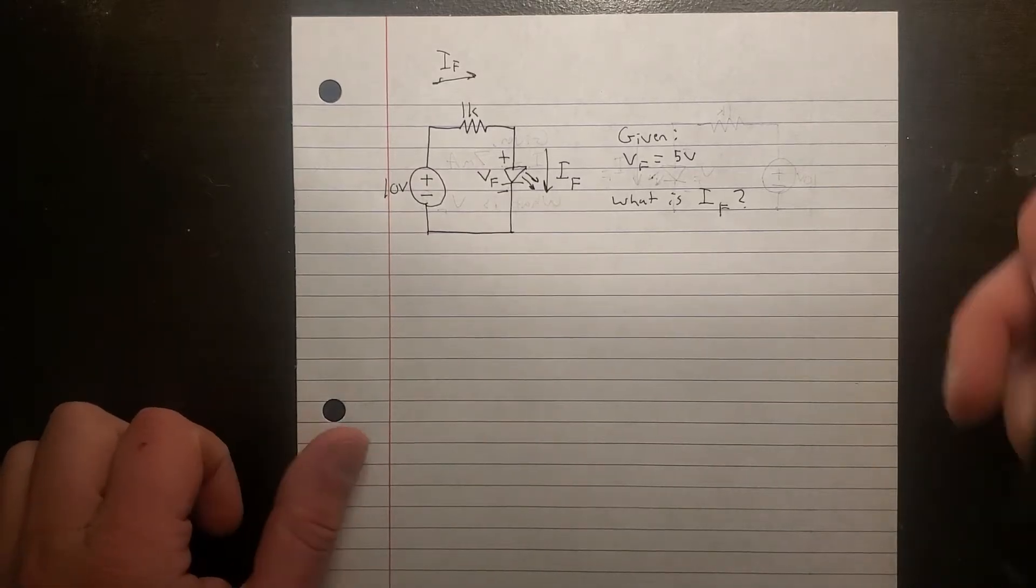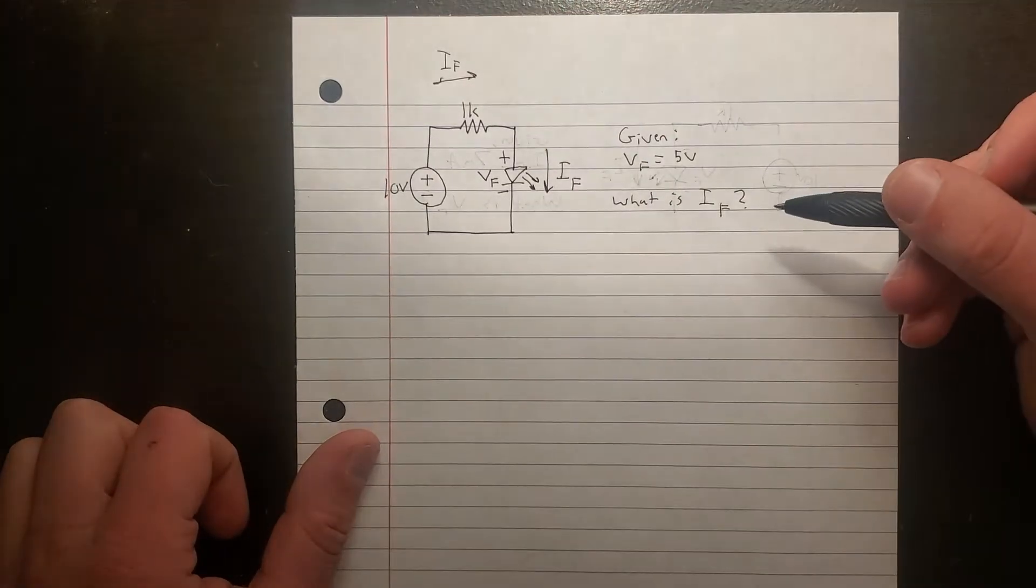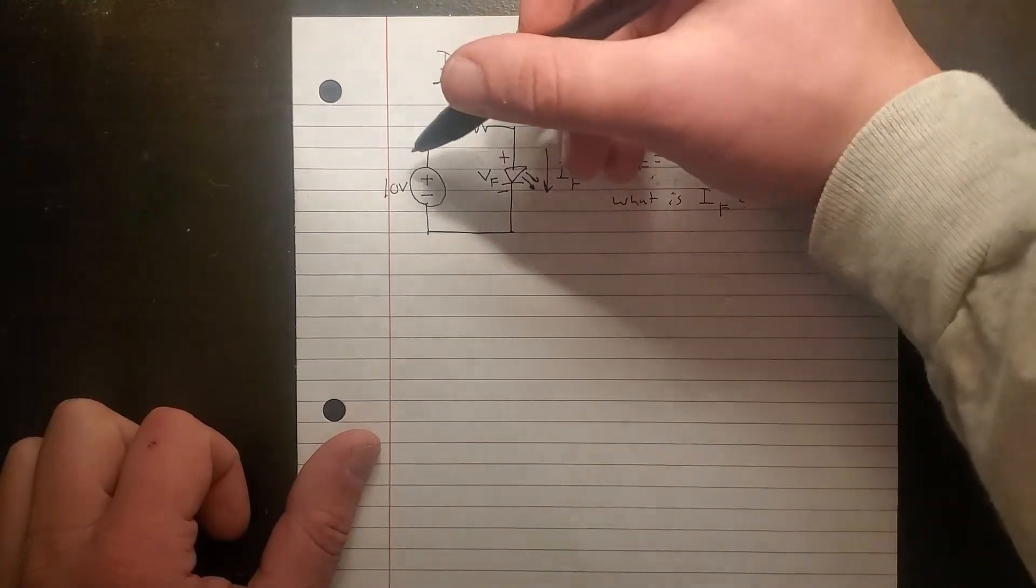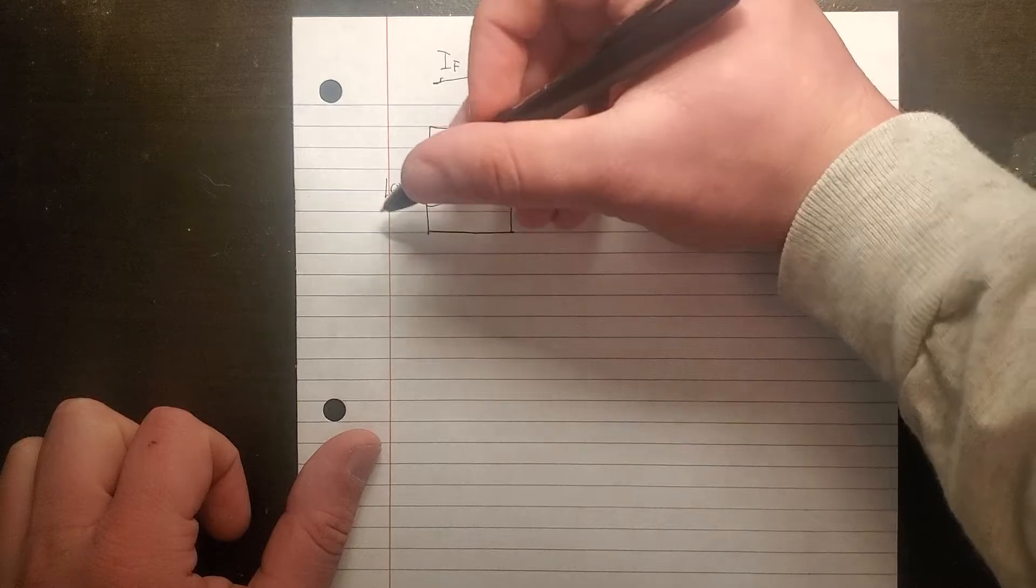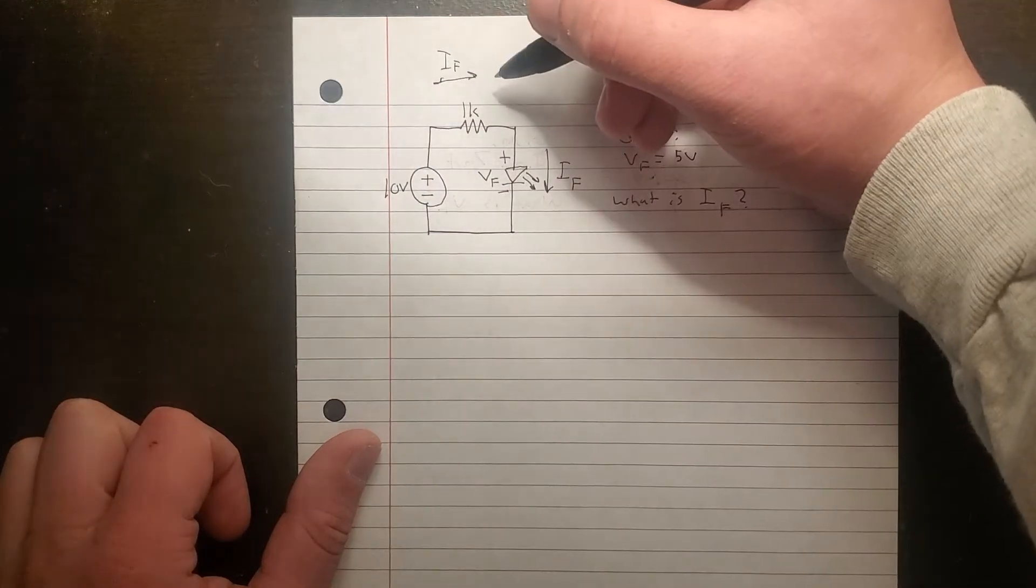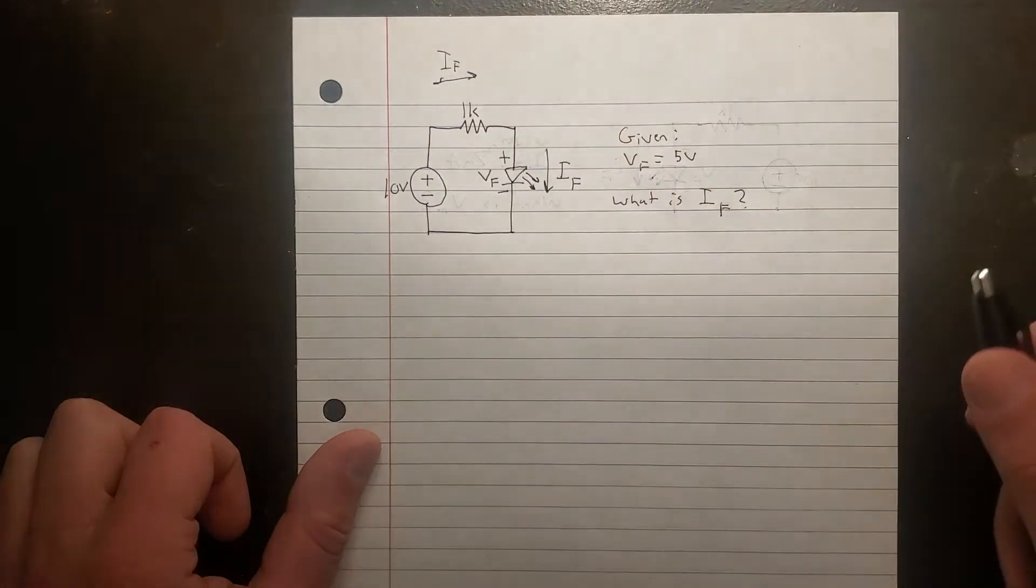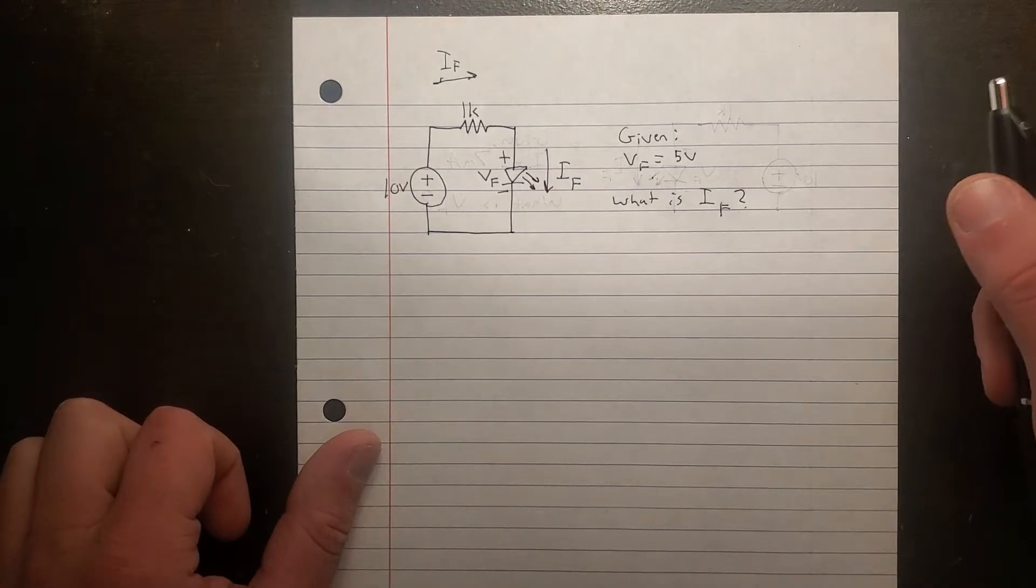So the first step is to identify our IF. This is what we're trying to find. Since all the elements are in series, the current over the battery is the same as the current over the resistor, and the same is true for the LED.